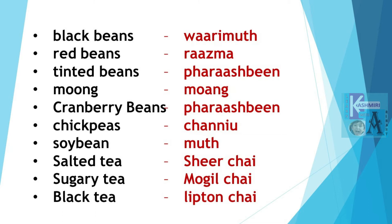Cranberry Beans are Farash Beans. Chickpeas are Chana. Chana. Soybean is Mut. Mut.